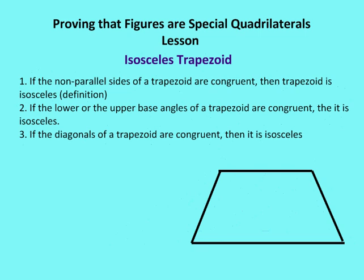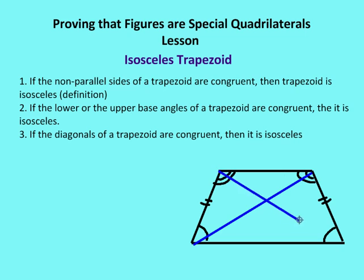To review, three ways to prove a trapezoid is isosceles: one, by definition — if the non-parallel sides are congruent, then the trapezoid is isosceles; two — if the lower or upper base angles are congruent, then the trapezoid is isosceles; three — if the diagonals of a trapezoid are congruent, then the trapezoid is isosceles.